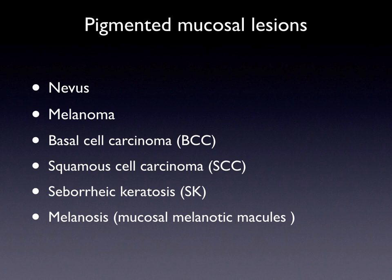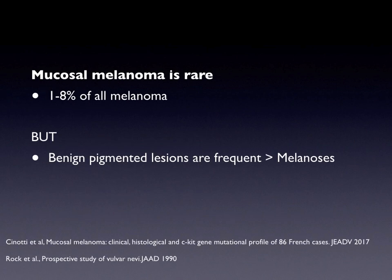Melanosis are the most frequent pigmented lesions of the mucosa, also called mucosal melanotic macules, and are characterized by an increased pigmentation of the basal layer of epithelium. Mucosal melanoma is rare and represents 1-8% of all melanomas depending on different populations. Melanosis, the benign pigmentation of the mucosa, are frequent, and it has been estimated that around 10% of women have melanosis of the vulva.